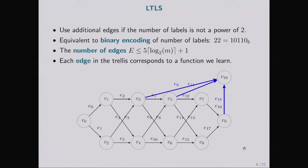By now, we can only represent problems where the number of labels is a power of two. But this is not true for other problems. So, to account for situations where the number of labels is not a power of two, we add some additional so-called skip edges. The places where we add those skip edges are determined by the binary representation of the number of labels.